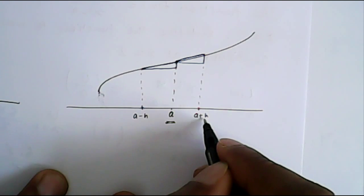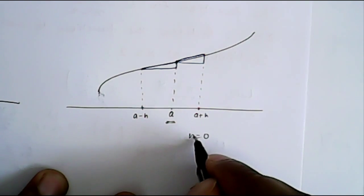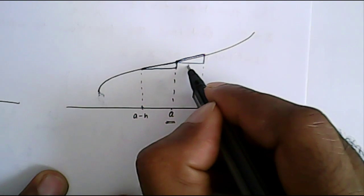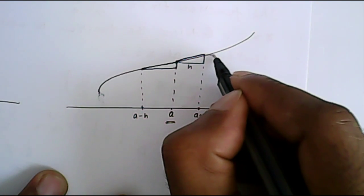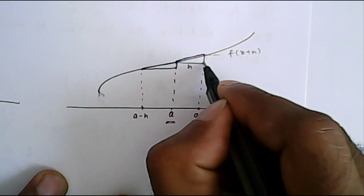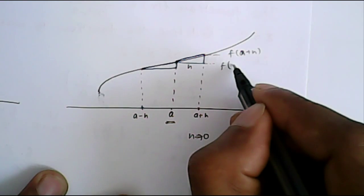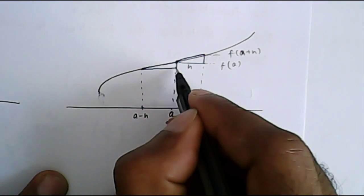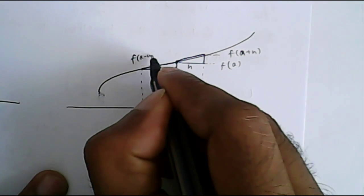Let's say this is a, and this is a plus h where h is very small, almost tending to zero. The value at a plus h is f of a plus h, and the value at a is f of a. Similarly, the value at a minus h is f of a minus h.